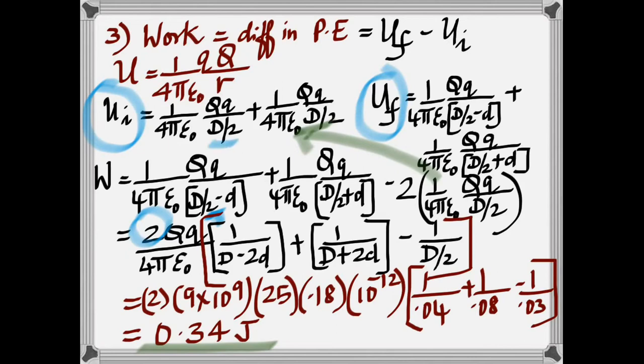In the initial case, you can see that it's exactly midway. That's why you have D by 2. And then in the final, it's closer to one of the charges by D and farther away from the other one. And when you take the difference, you get the work done.